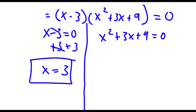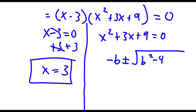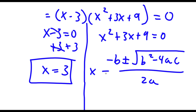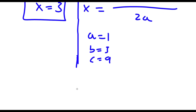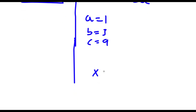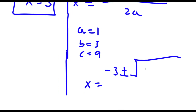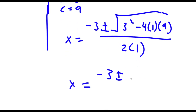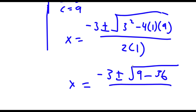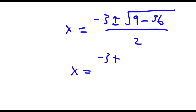Now for x squared plus 3x plus 9 equals 0, I'm going to use the quadratic formula: negative b plus or minus the square root of b squared minus 4ac, all over 2a. In this case a is equal to 1, b is equal to 3, and c is equal to 9. So x equals negative 3 plus or minus the square root of 3 squared, which is 9, minus 4 times 1 times 9, which is 36, all over 2 times 1, which is 2. So x equals negative 3 plus or minus the square root of 9 minus 36, which is negative 27, over 2.